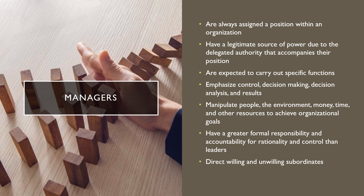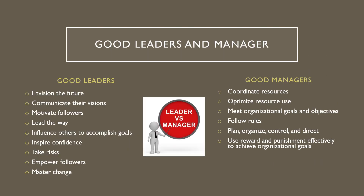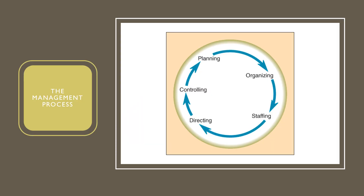There are additional characteristics of both the leader and the manager that illustrate how each role determines quality. The final management process includes planning, organizing, staffing, directing, and controlling — a framework that can be utilized in any organization. Let's look at a description for each of these functions.